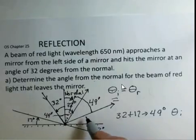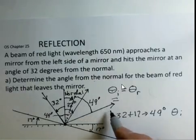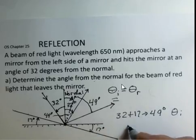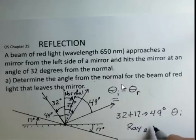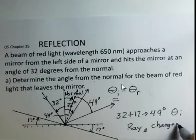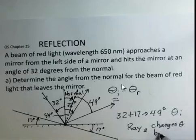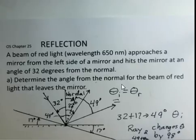The ray has been shifted by 98 degrees. So the ray changes direction. This ray 2 with the mirror rotated changes direction by 98 degrees. That's 49 plus 49, 98 degrees.